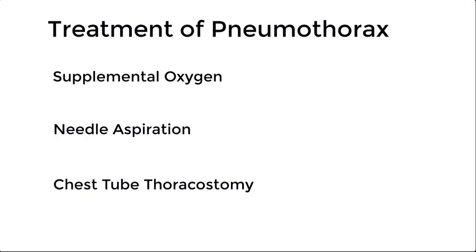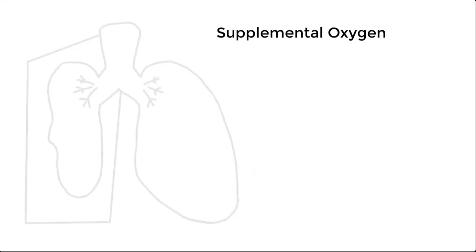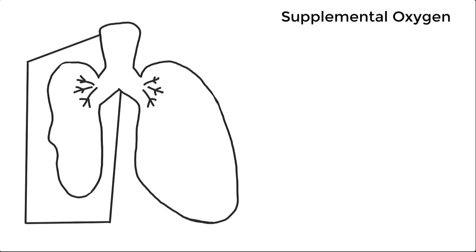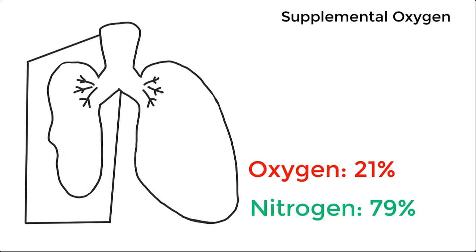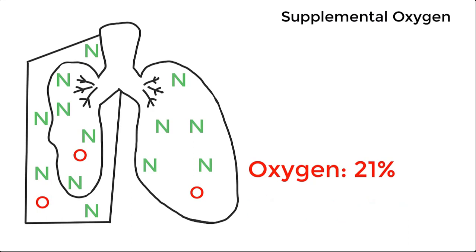Now that we can identify the various types of pneumothorax, let's describe the various treatments we can employ, as well as discuss when they are indicated. Supplemental oxygen therapy relies on the principle of diffusion to draw air out of the pleural space. We first have to remember that the composition of air is 21% oxygen and 79% nitrogen. This is the composition of air existing in both the lung and the pleural space.